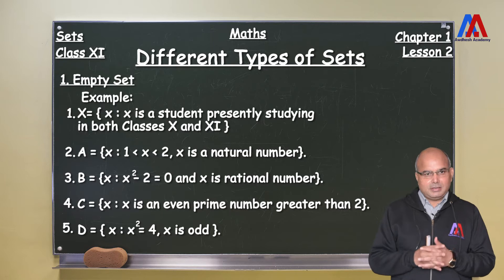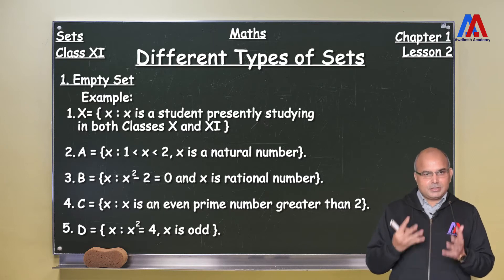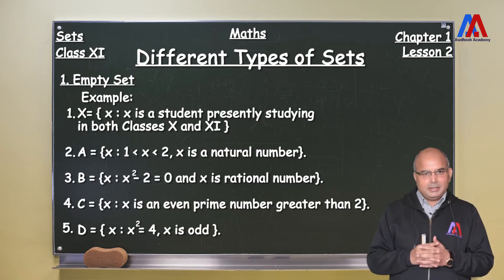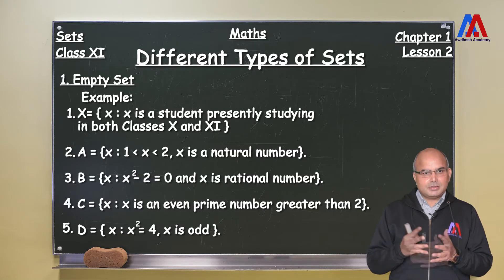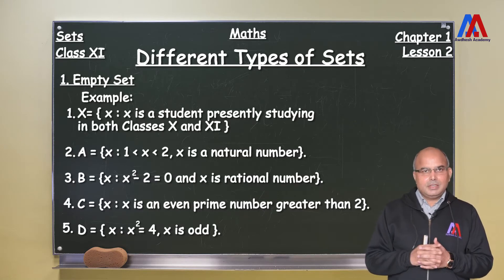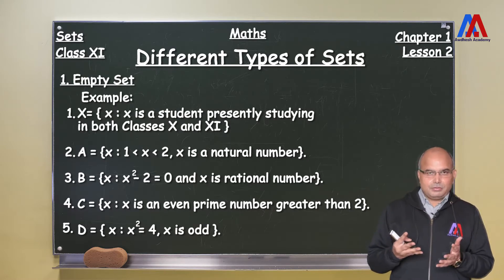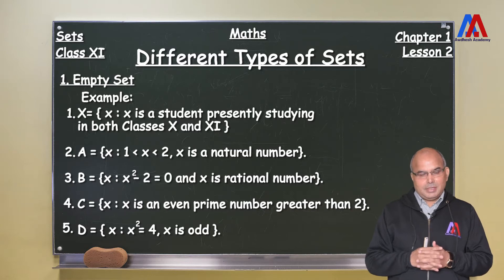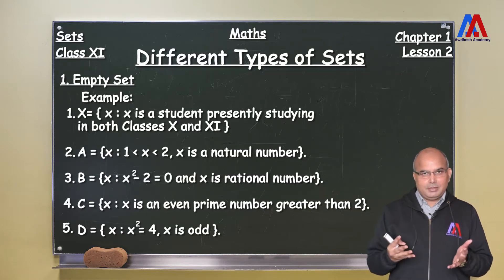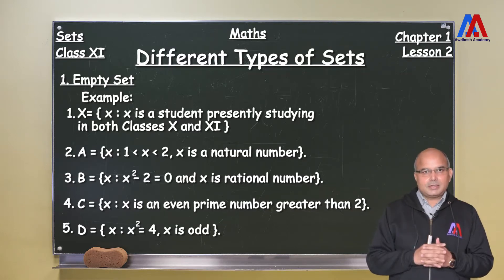Let's take the third example. If we say that x is such that it is a rational number and x² - 2 = 0, then we know the value of x is √2. And √2 is not a rational number. And therefore, there can be no element in this set.